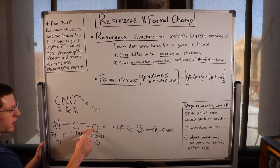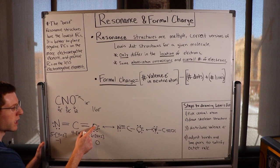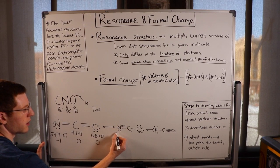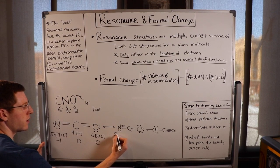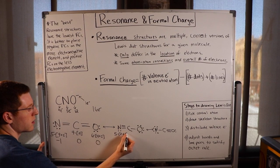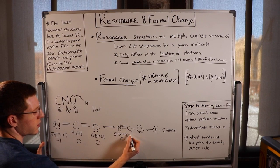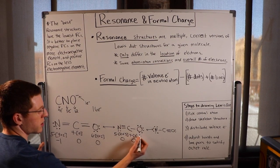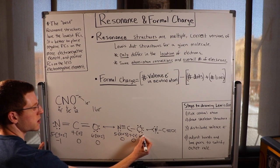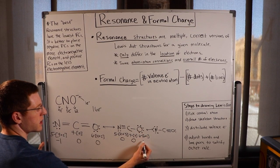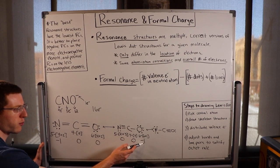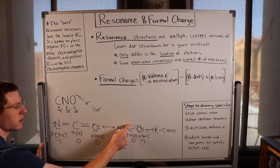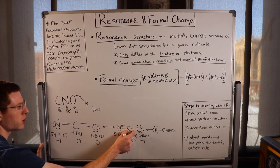We really would have preferred that negative 1 on the oxygen, since oxygen is by far the most electronegative of the three elements. Let's test the second structure: nitrogen has 5 minus 0 dots plus 5 lines — 5 minus 5 equals 0. Carbon is 4 minus 0 plus 4 lines — 0. Oxygen has 6 minus 6 dots plus 1 line — 6 minus 7 equals negative 1. So this structure also has only one negative 1 formal charge, but this time it's on the more electronegative oxygen. So this resonance structure is better than the first one.